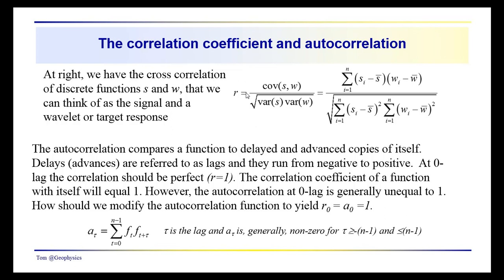Here we've shown the correlation coefficient — a more statistical representation — as the covariance between S and W over the square root of the product of the variances of S and W. S, you remember, we're using as the seismic signal, so these could be the trace amplitudes. W could be the wavelet embedded in the data — a waveform, a reference waveform associated with the reservoir interval that you're looking for.